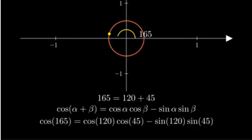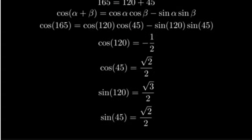Now, let's recall the values for these trigonometric functions. Cosine of 120 degrees is negative one half. Cosine of 45 degrees is square root of 2 over 2. Sine of 120 degrees is square root of 3 over 2, and sine of 45 degrees is square root of 2 over 2.